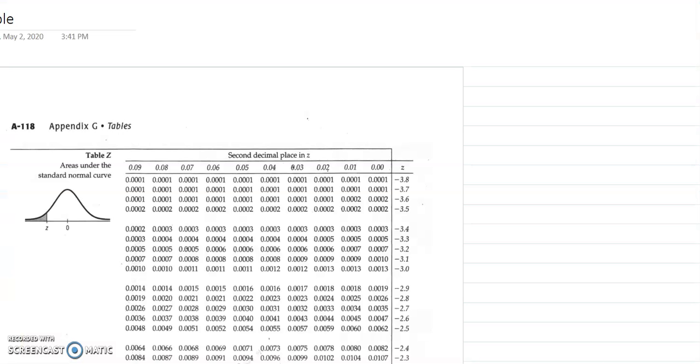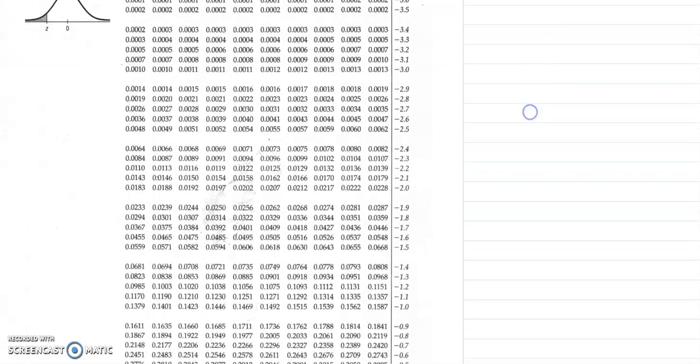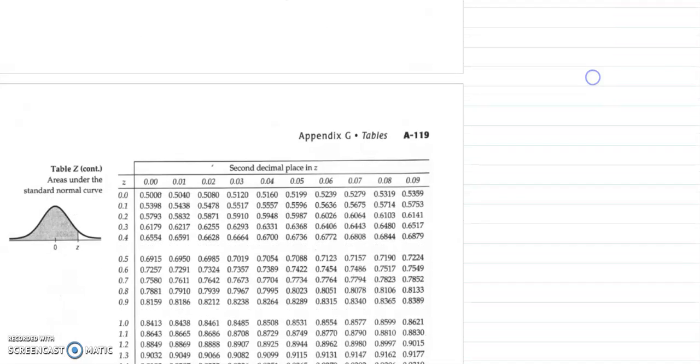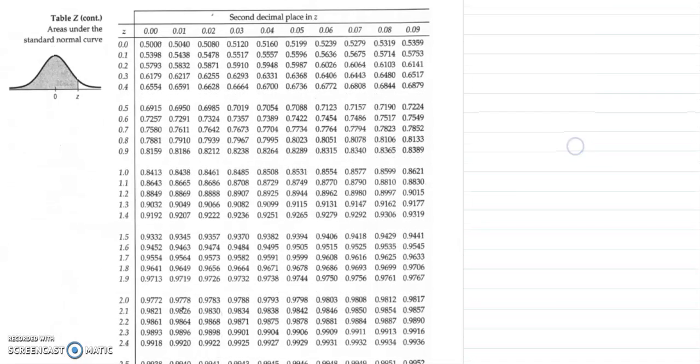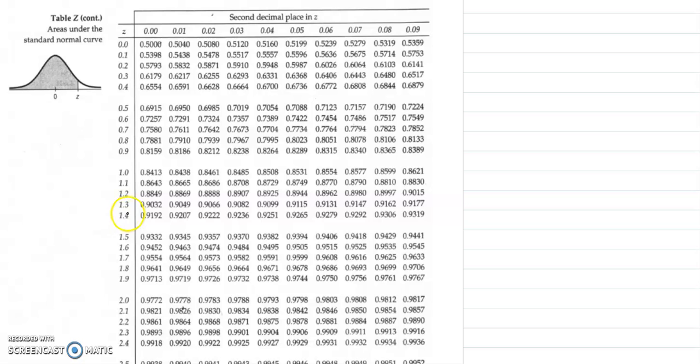So looking at your z-table, one thing to know is that we're dealing with a positive z. So the first side is negatives. So I'm going to move on to the positives and it was 1.42. So I'm going to find the first place right here is 1.4 and then I intersect it with that hundredths place. So where these are intersecting is giving me the percentage. So 0.922 is the answer.